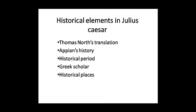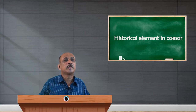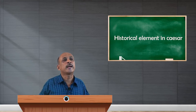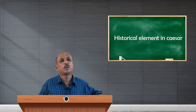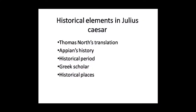Julius Caesar was a historical character and an emperor of Rome. Shakespeare based his play on the historical accounts given by Thomas North. Thomas North's translation of Plutarch's Lives is one significant work from which Shakespeare borrowed the historical account of Julius Caesar's life and administration.